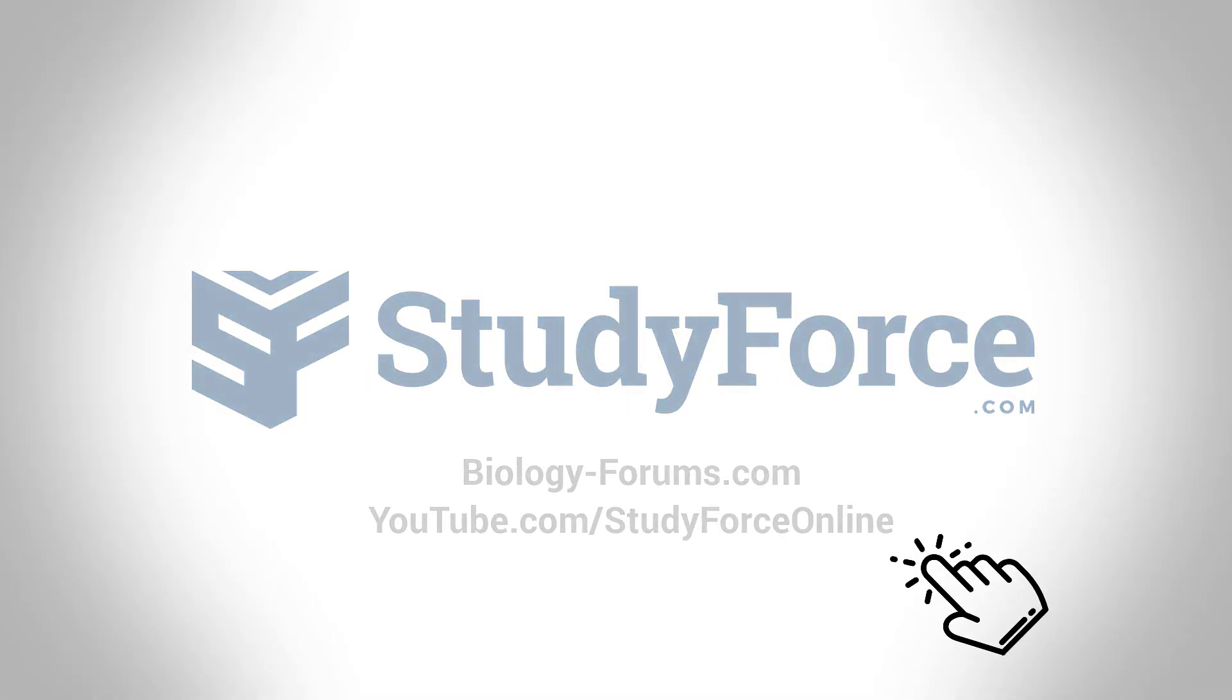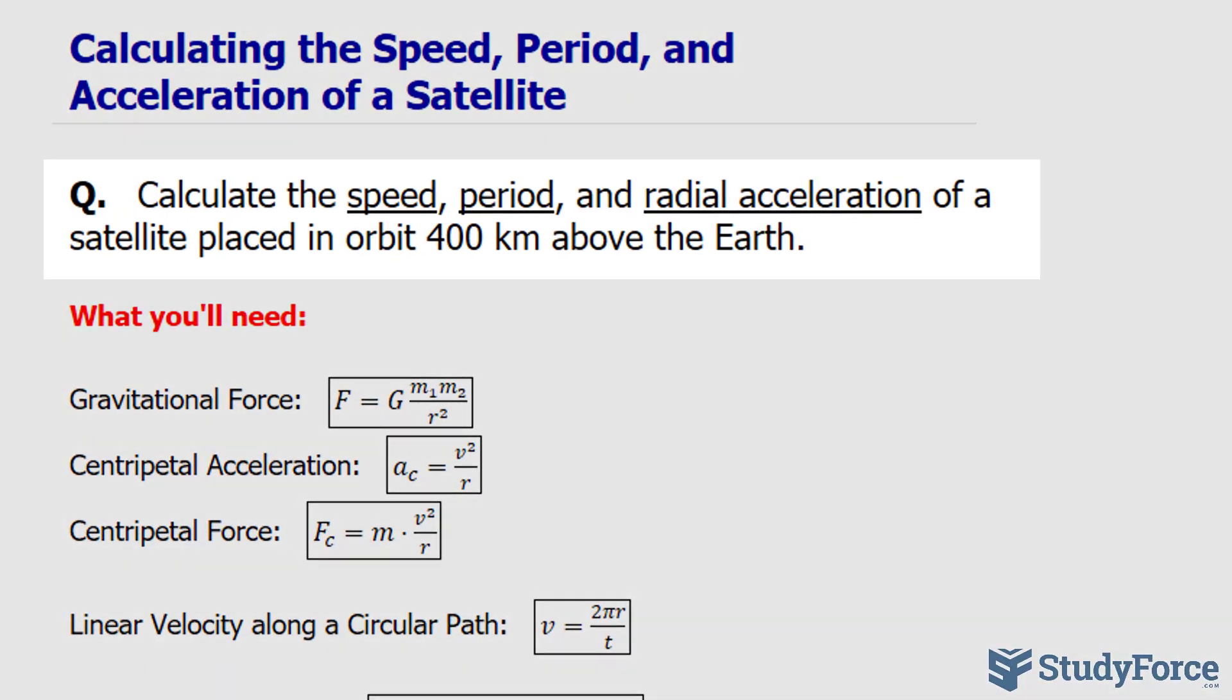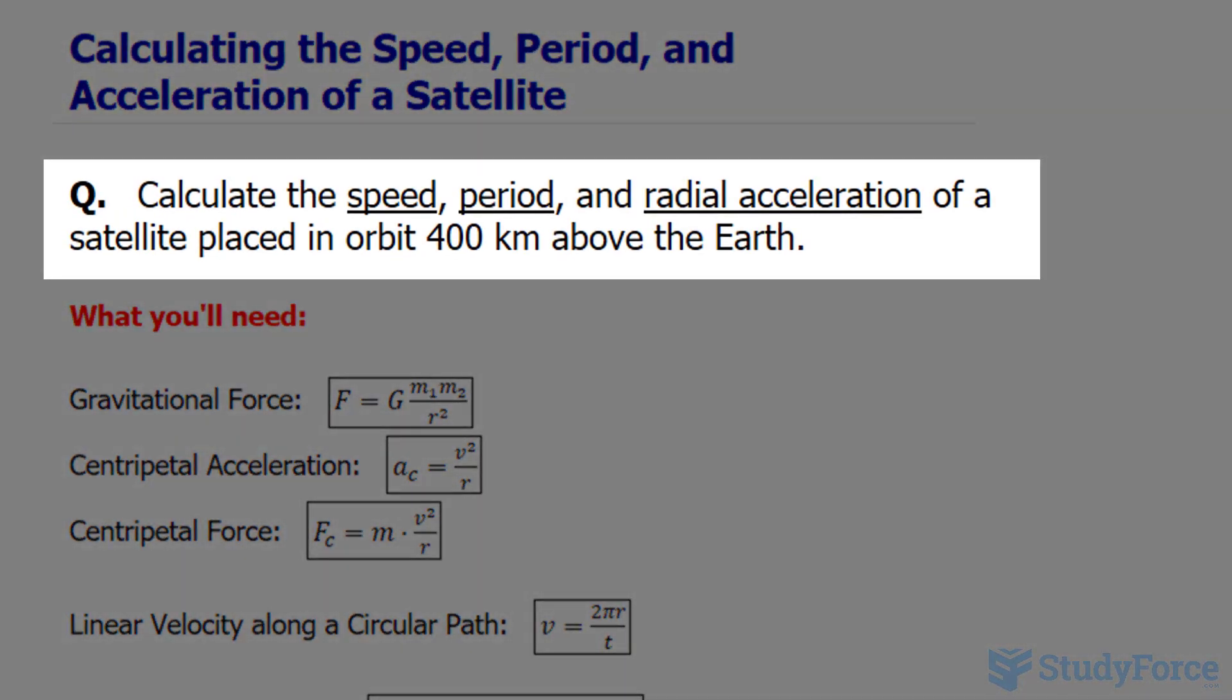In this lesson, I'll show you how to calculate the speed, period, and acceleration of a satellite. The question reads: calculate the speed, period, and radial acceleration of a satellite placed in orbit 400 kilometers above the Earth.